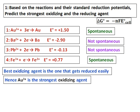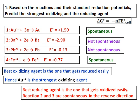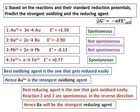For the reducing agent, the reaction has to be an oxidation reaction. So if you reverse all the reactions given, the one with the largest positive value will be reaction 2. Ba, when reversed, becomes Ba → Ba²⁺ + 2e⁻ with an E⁰ value of +2.90. Hence, barium will be the strongest reducing agent.